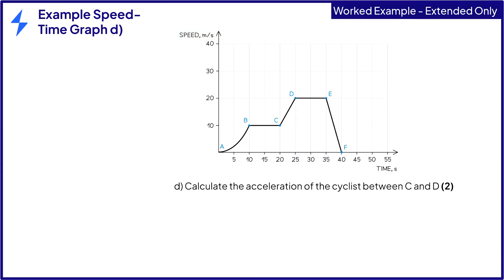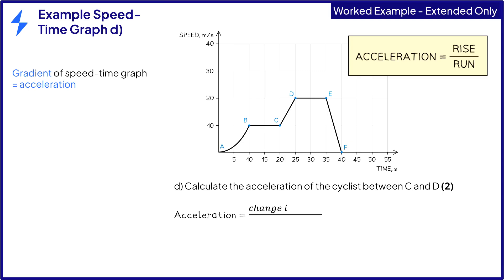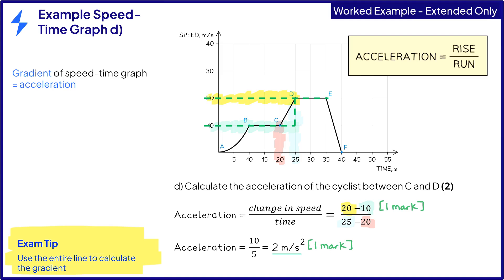Part D says to calculate the acceleration of the cyclist between C and D for two marks. We should immediately recognise that acceleration is the rate of change of speed, which equals the gradient of the speed-time graph. Acceleration is equal to rise over run. On a speed-time graph, this equals the change in speed divided by time, which equals 20 minus 10 divided by 25 minus 20 for one mark. This equals 10 divided by 5, which equals 2 metres per second squared for the final mark. It is good practice to use the entire length of the line to calculate the gradient.